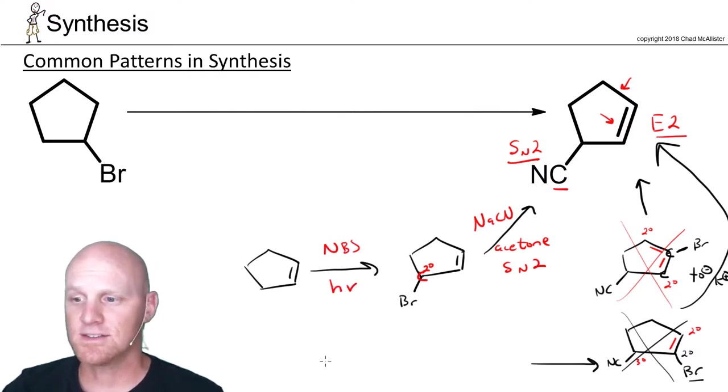And that would exactly replace one of the hydrogens on the allylic carbon with a bromine. Do exactly as you want, great yield, no competing reactions to worry about. That's what you do.